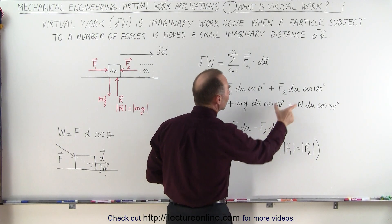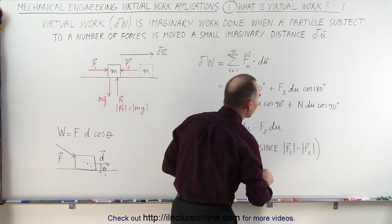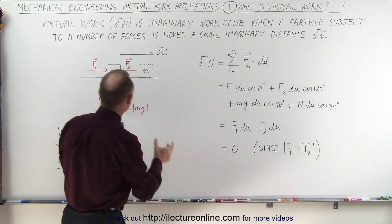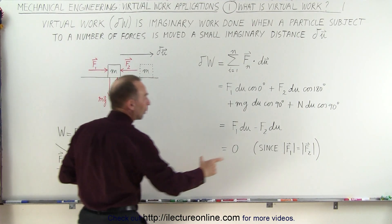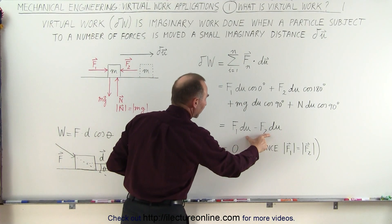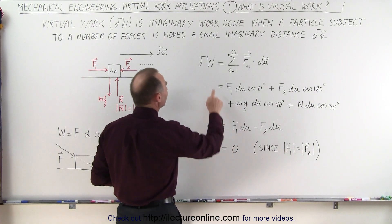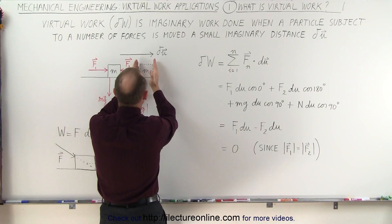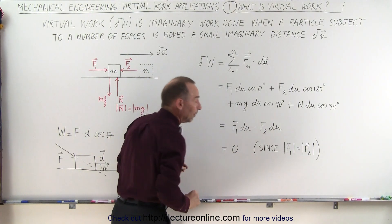So we have F1·du, which is a positive quantity because it's multiplied by the cosine of zero, minus F2·du, which is a negative quantity since the cosine of 180 is negative one. Since F1 and F2 are of equal magnitude, when we add these two up together we get zero, which means that the virtual work done on this object as we move it a small distance delta u is actually equal to zero.